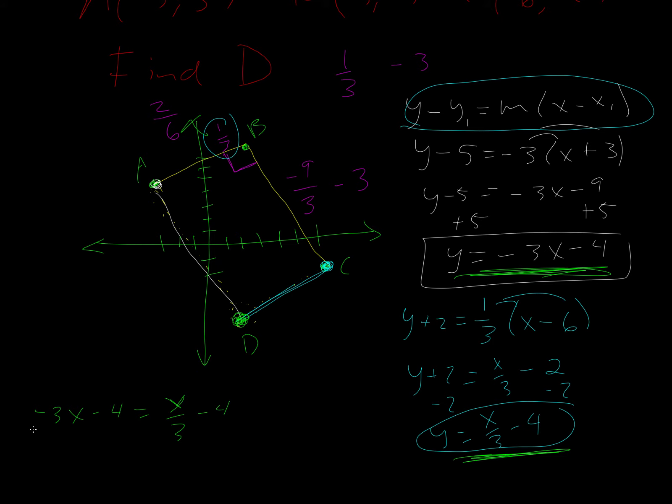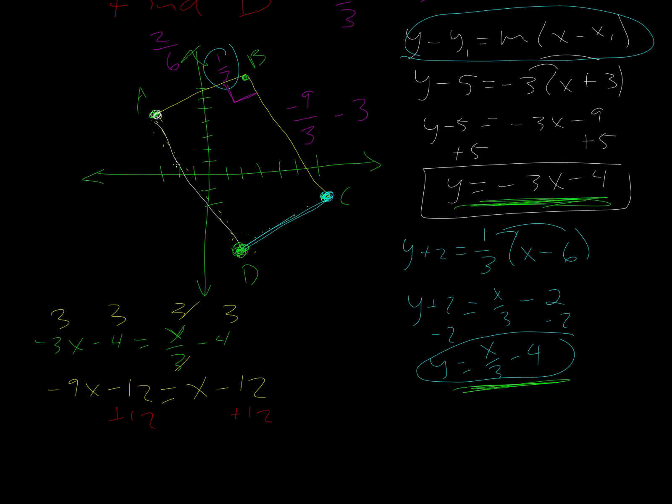Now, what I'm going to do first is clear the fraction. So I'm going to multiply everything by three. So that becomes negative nine X, negative twelve, three and three cancel, so we get X, and then negative twelve. Okay. Now I'm going to add twelve, add twelve.